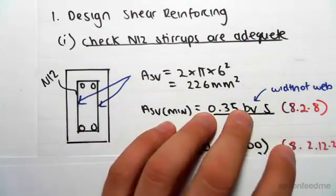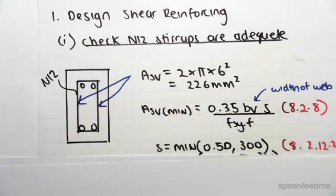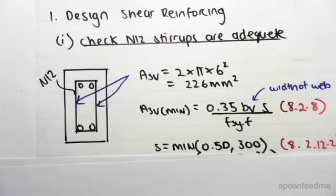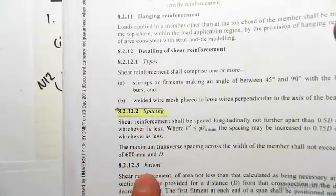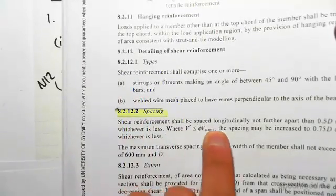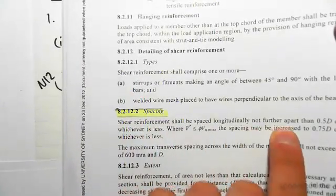So the maximum spacing s you can find in 8.2.12.2. So it's over the page, we have a clause for spacing. We read here: shear reinforcement shall be spaced longitudinally not further apart...